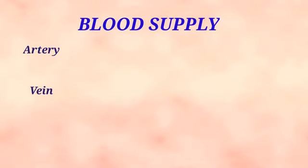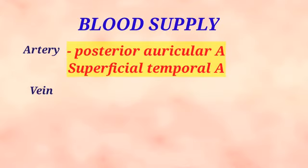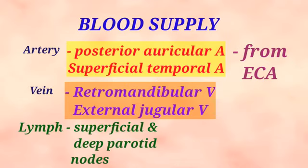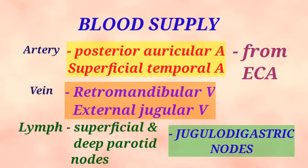The blood supply of the parotid gland: the gland is supplied by the posterior auricular branch and the superficial temporal branch of the external carotid artery. Venous blood is drained by the retromandibular vein and the external jugular vein. Lymph from the gland is drained into the superficial and deep groups of parotid lymph nodes, and the efferent vessels from these nodes finally drain into the jugulodigastric group of deep cervical nodes.